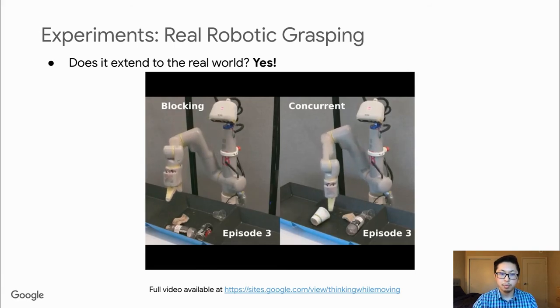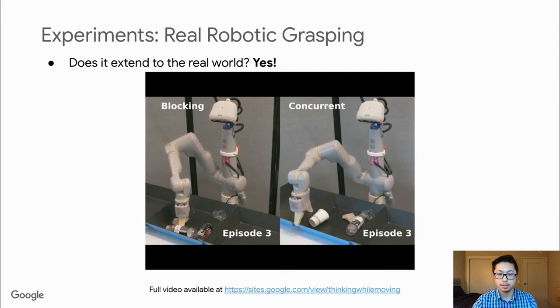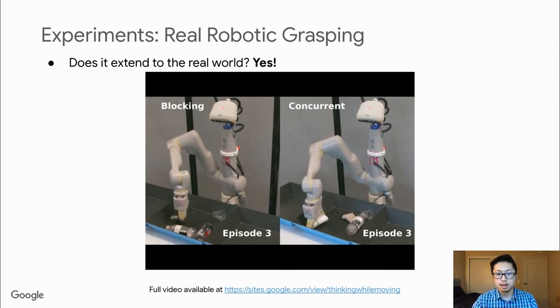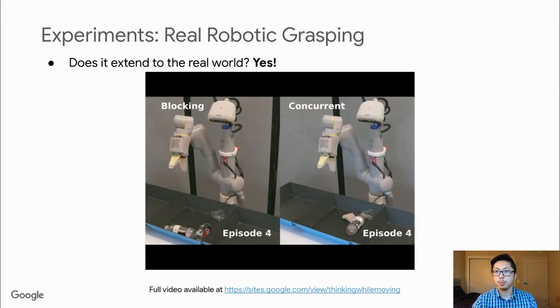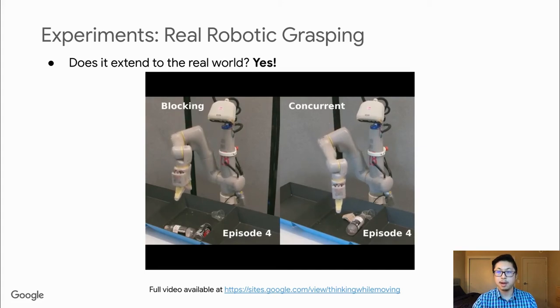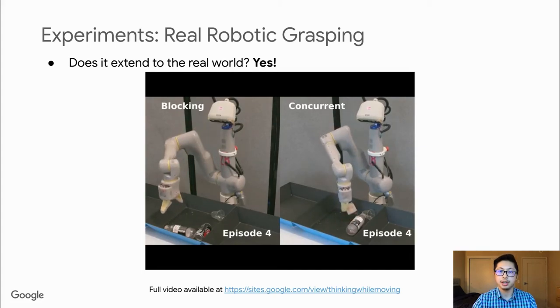Even when the concurrent model misses the target object, it's able to quickly correct and attempt another grasp. We have a full video available with many more results in the simulation and real-world settings.